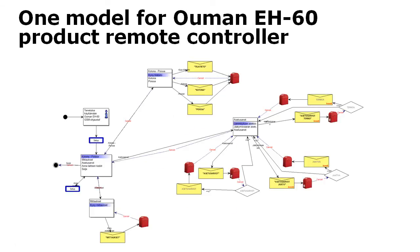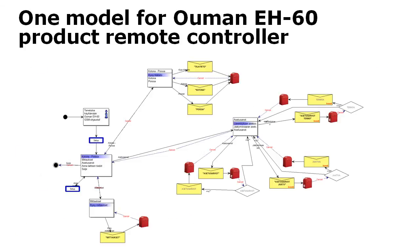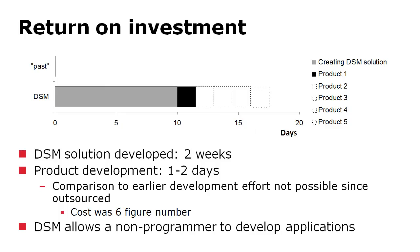The ready designs are now drawn rather than writing code, and from these models the code is generated. Loman calculated the return on investment: they used two weeks to build the languages and code generators, but then only one or two days to implement the ready products. They were not able to compare past development time directly, but they had been paying a six-figure number to an external supplier for developing these systems.